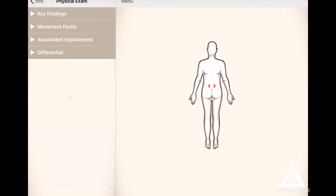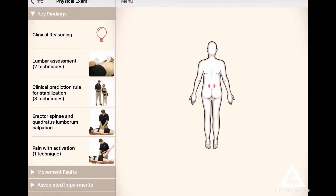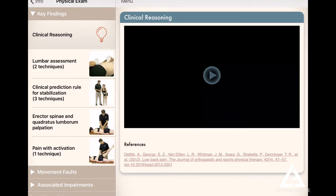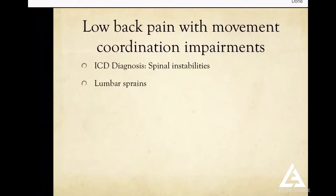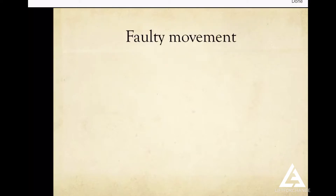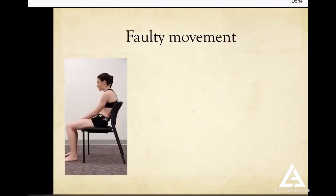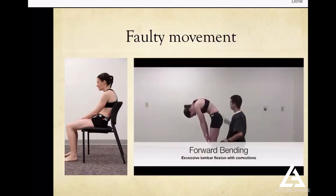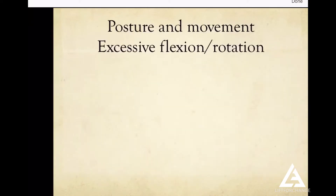Going back to the physical exam section — when somebody comes into the clinic, these are the types of things you want to find. You have key findings like your lumbar assessment or the clinical prediction rule for stabilization. You have your clinical reasoning, and you can see a video of what that looks like in the clinic. Common lumbar sprains and strains make up 70% of patients with low back pain. This is likely related to faulty static postures or poor movement coordination during function. The examination for key findings should always begin with an analysis of posture and movement.